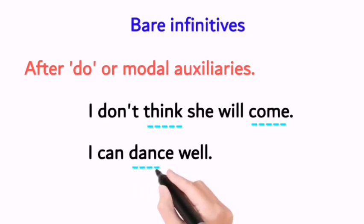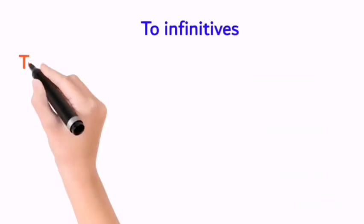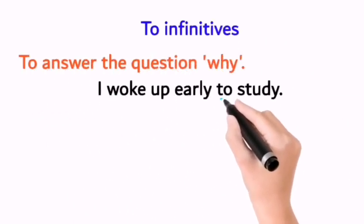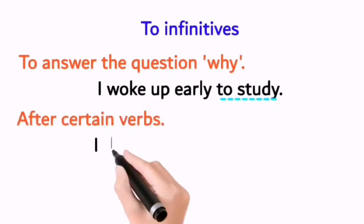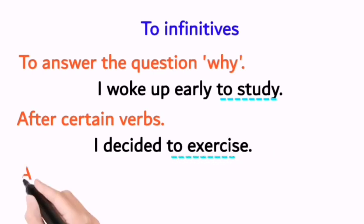Here the underlined words are examples of bare infinitives. To infinitives can be used to answer the question 'why'. I woke up early to study. They can also be used after certain verbs. I decided to exercise.